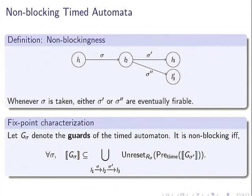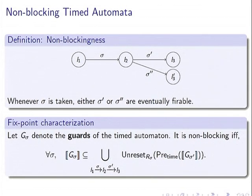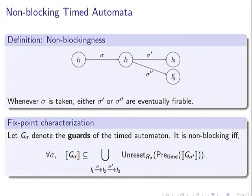Now let me show the techniques used to compute these parameters, focusing on non-blockingness. A timed automaton is non-blocking if whenever you take a transition and change location, you can take another transition eventually — every execution can be extended to an infinite execution. For a timed automaton, this can be expressed as: the guard of edge σ should be included in the predecessors of the next transitions. Pre-time gives time predecessors, and the reset gives the universal reset.